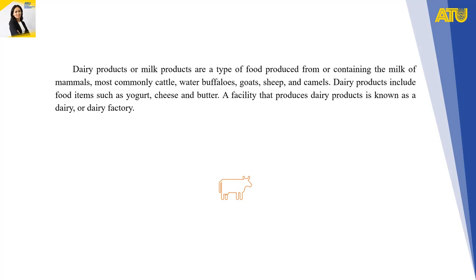Dairy products or milk products are a type of food produced from or containing the milk of mammals, most commonly cattle, water buffaloes, goats, sheep, and camels. Dairy products include food items such as yogurt, cheese, and butter. A facility that produces dairy products is known as a dairy or dairy factory.